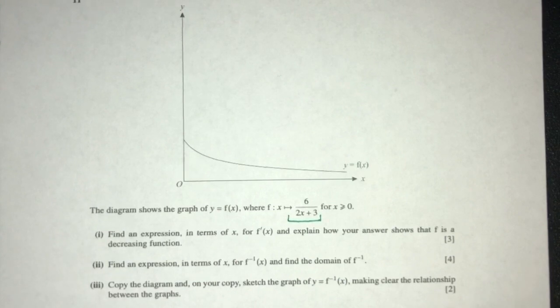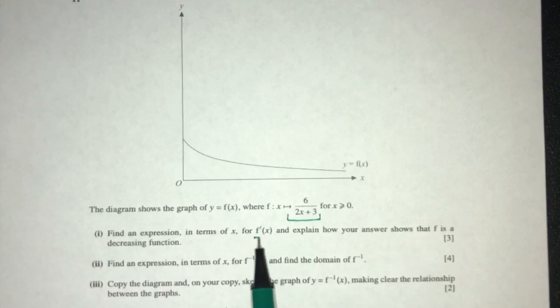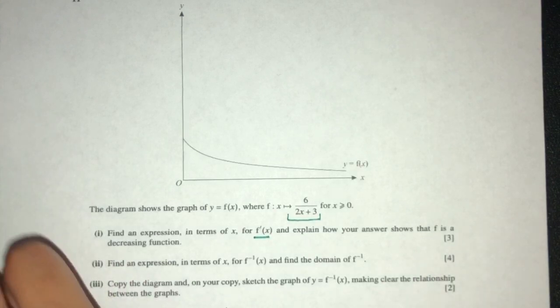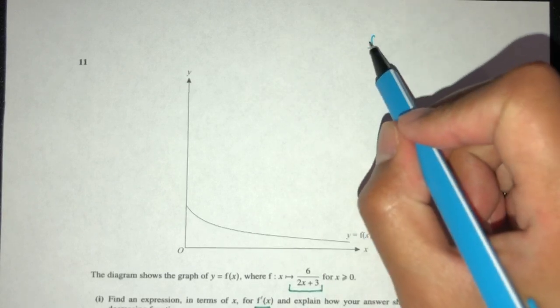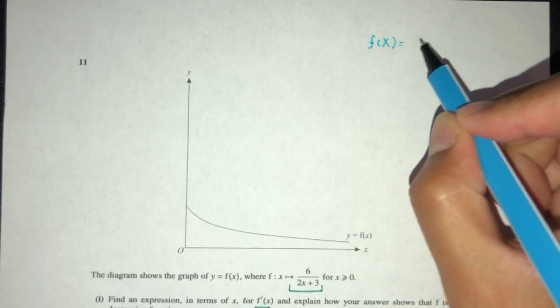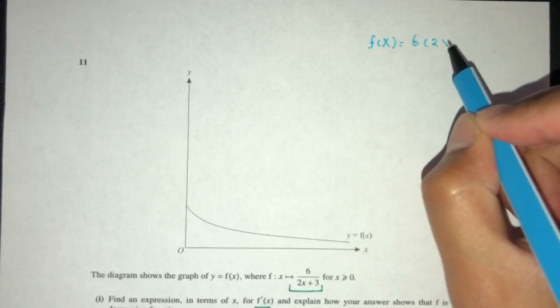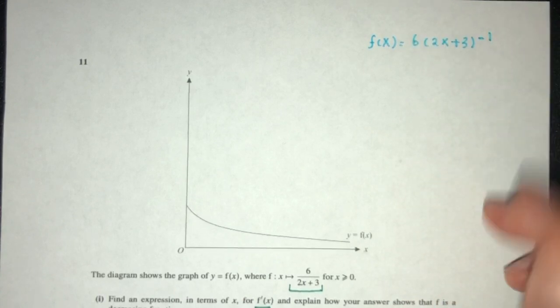For part one, we have to find an expression for f prime of x and explain how your answer shows that f is a decreasing function. So step by step, first thing we realize is I can rewrite f of x as 6 times (2x plus 3) to the power of minus 1.